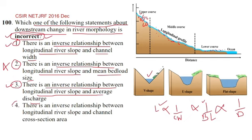Now going with the fourth one. There is an inverse relationship between the longitudinal slope and the channel cross-section. As we can see, this is the channel cross-section. If slope is more, channel section is less.